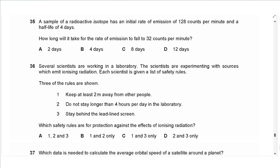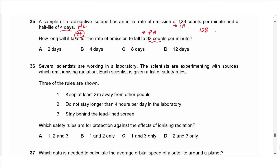Question 35: a radioactive isotope has an initial emission rate of 128 counts per minute and a half-life of 4 days. To reach 32 counts per minute: 128 → 64 → 32, which is two half-lives. Each half-life is 4 days, so the total time is 8 days.